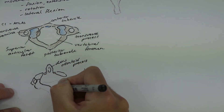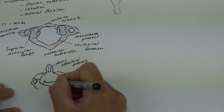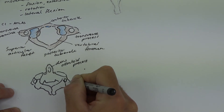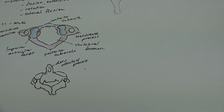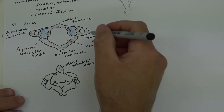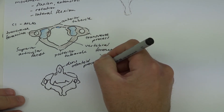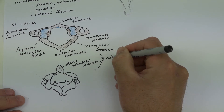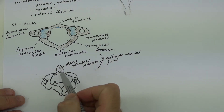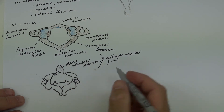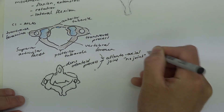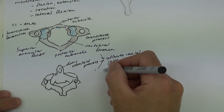The axis is C2. It gets its name because it forms a pivot — like a car axle around which the wheel pivots. The joint between C1 and C2 is called the atlanto-axial joint. Because of the tooth or odontoid process forming the pivot point, we call this the 'no' joint, because shaking your head to say no is the movement achieved here. It is a synovial pivot joint.